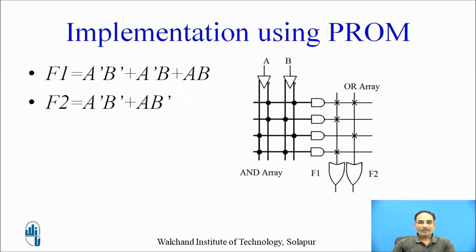This is the final diagram of these two function implementations. For a two-variable function, the PROM used has four AND gates. Since we need to implement two functions, we require two OR gates. The OR array is programmable whereas the AND array is fixed — two inputs, four minterms, four AND gates.